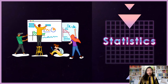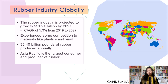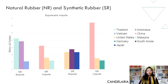On the global scale, the rubber industry is projected to reach a value of 51.21 billion dollars by 2027, with an annual growth rate of 5.3 percent between 2019 and 2027. However, the industry faces competition from materials such as plastics and vinyl, which are more inexpensive, and some materials like PET, PP, and ABS have better elasticity, rigidity, anti-slip, and durability. Additionally, 35 to 40 billion pounds of rubber products are produced each year, and the Asia-Pacific region remains the largest producer and consumer of rubber.